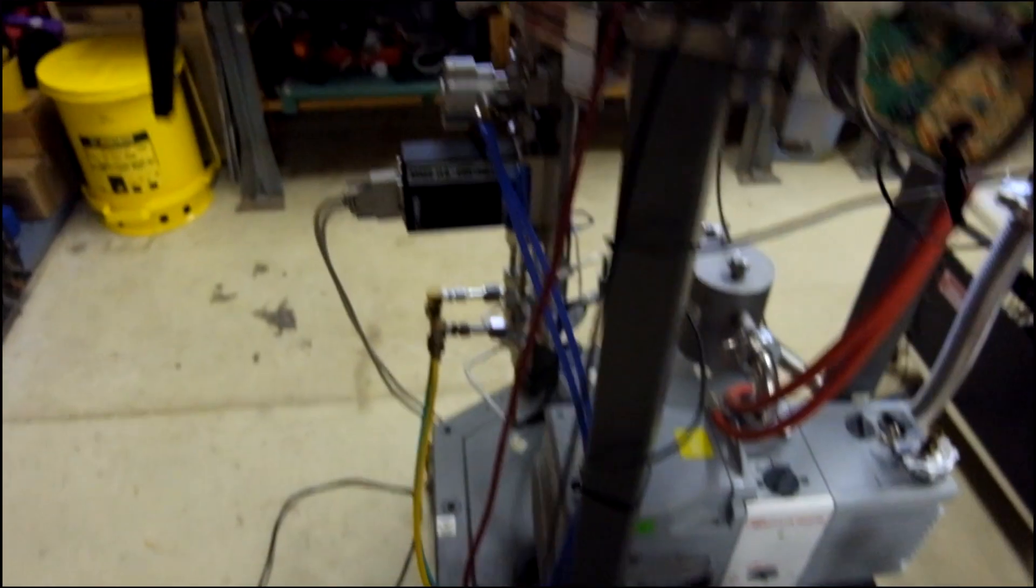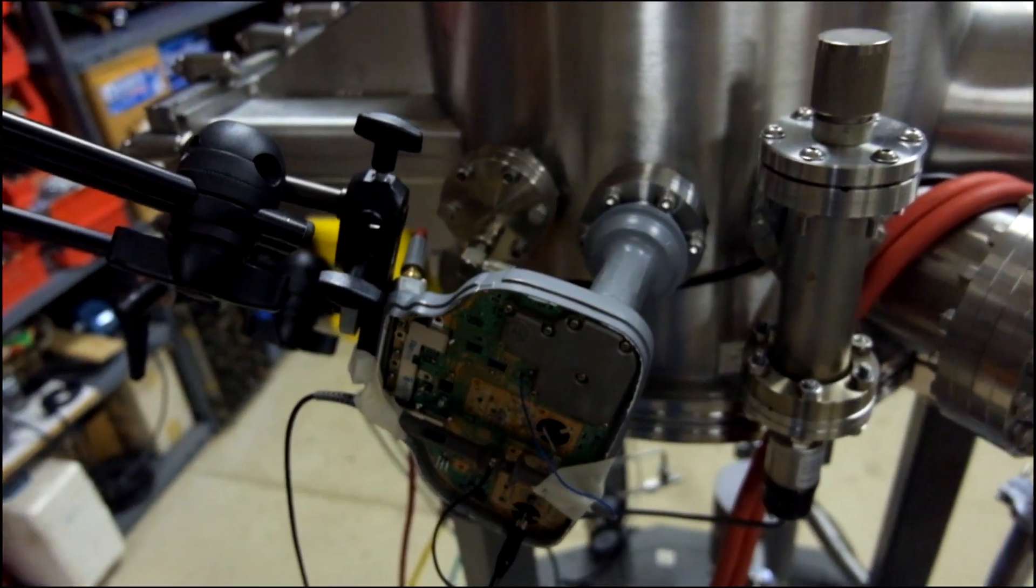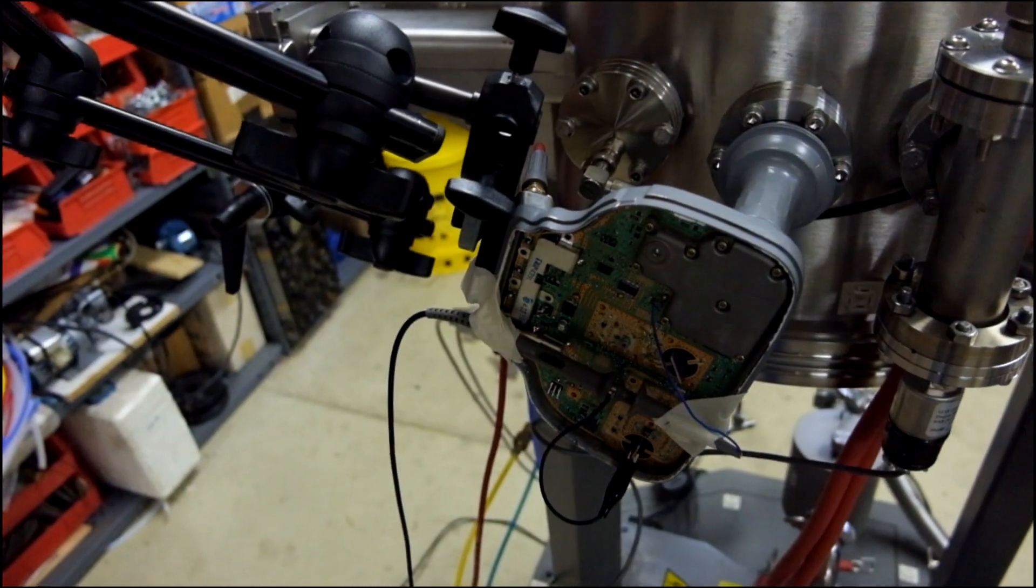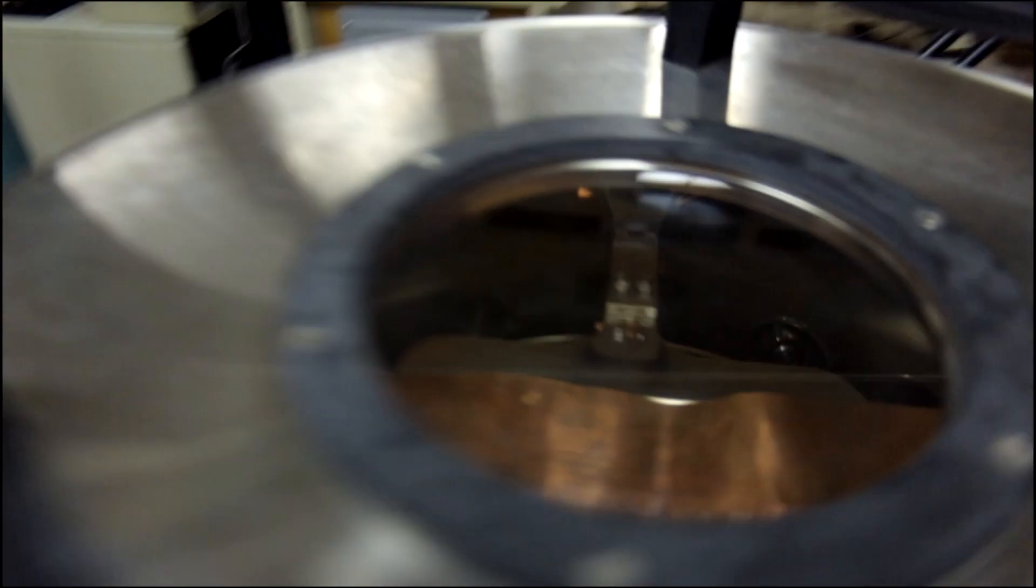Down here I have a couple gases hooked up to the mass flow controllers. This is some microwave stuff I'm playing with, trying to do microwave interferometry of the plasma by measuring the phase shift. That's really it. The inside right now is set up for sputtering.